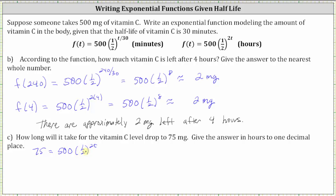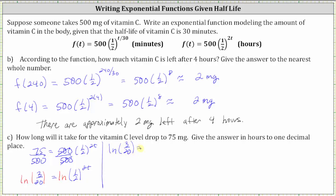Let's first isolate the exponential term by dividing both sides by 500. Simplifying, 75 divided by 500 is three-twentieths, and the right side simplifies to one-half raised to the power of 2t. Now we take the natural log of both sides. Applying the power property of logarithms, natural log of one-half to the power of 2t equals 2t times natural log of one-half.